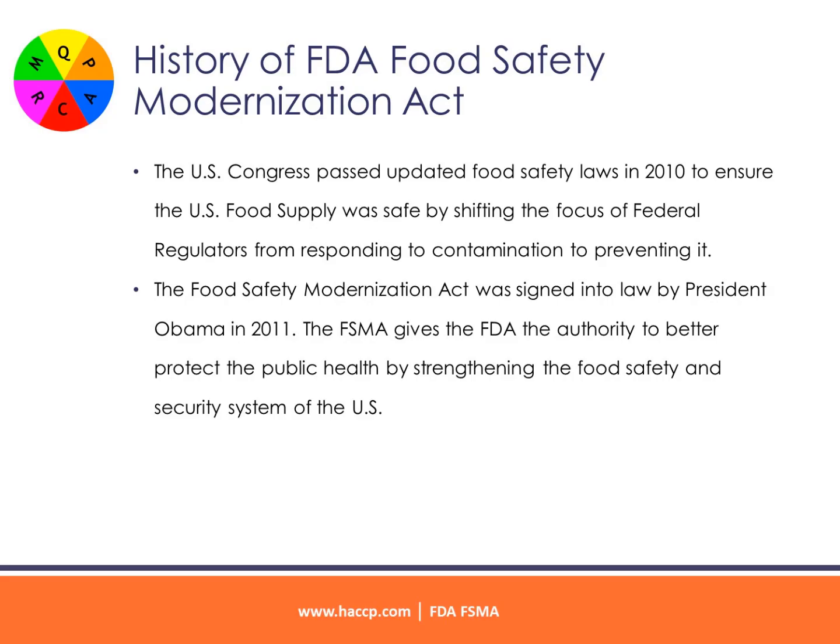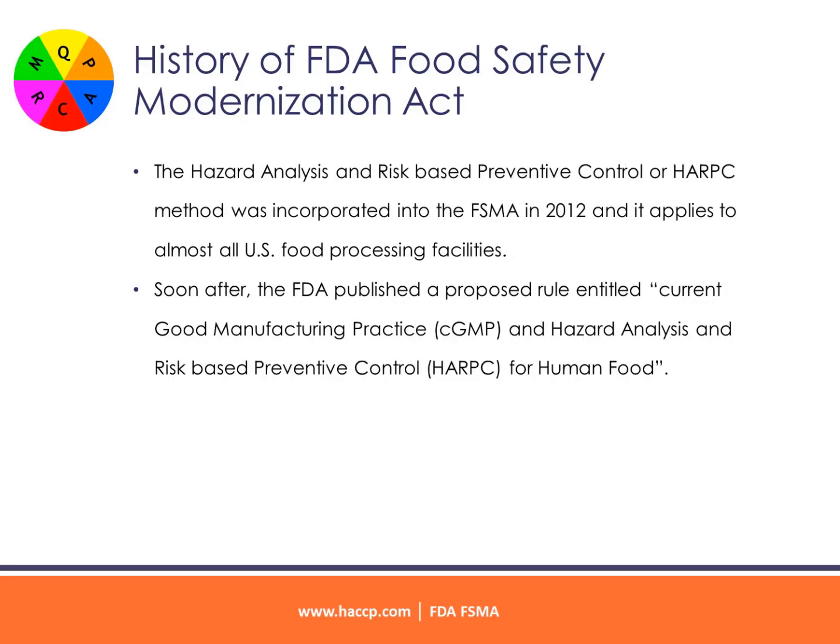History of FDA Food Safety Modernization Act: The U.S. Congress passed updated food safety laws in 2010 to ensure the U.S. food supply was safe by shifting the focus of federal regulators from responding to contamination to preventing it. The Food Safety Modernization Act was signed into law by President Obama in 2011. The FSMA gives the FDA the authority to better protect public health by strengthening the food safety and security system of the U.S. The Hazard Analysis and Risk-Based Preventive Control, or HARP-C, method was incorporated into the FSMA in 2012 and applies to almost all U.S. food processing facilities. Soon after, the FDA published a proposed rule entitled Current Good Manufacturing Practice and Hazard Analysis and Risk-Based Preventive Control for Human Food.